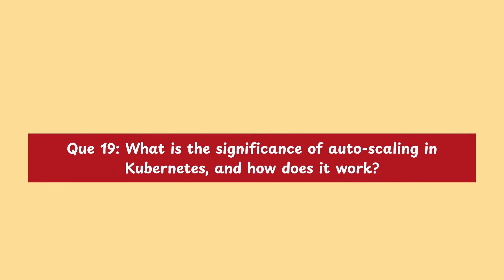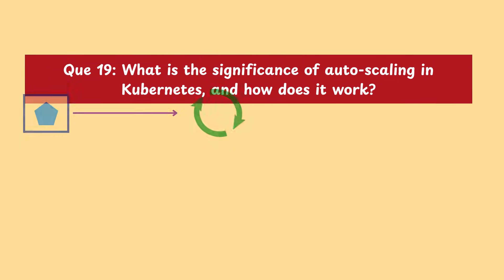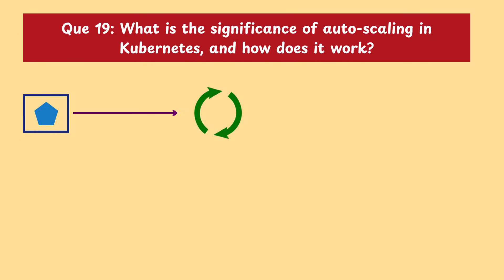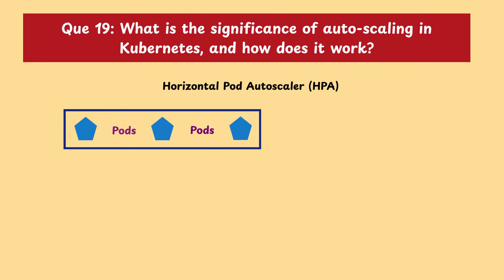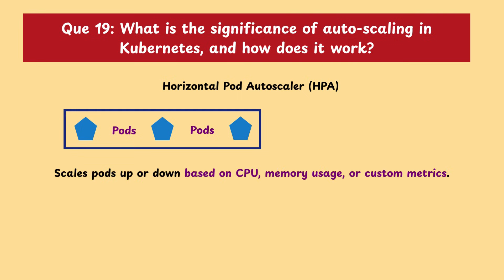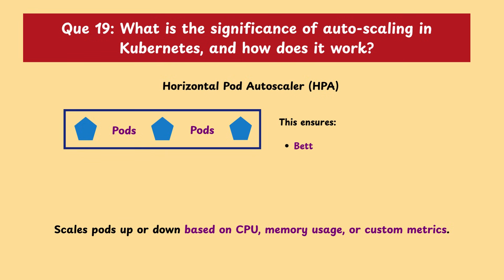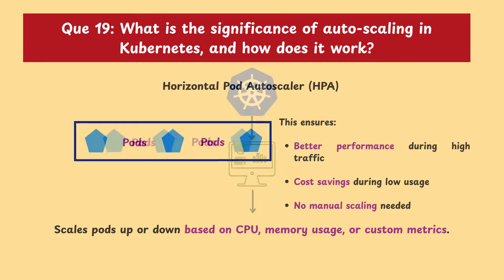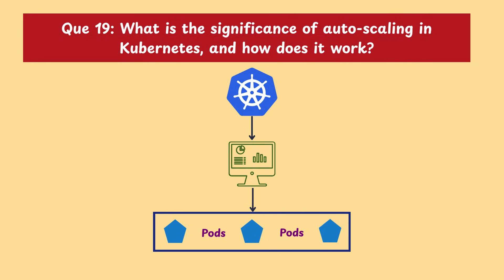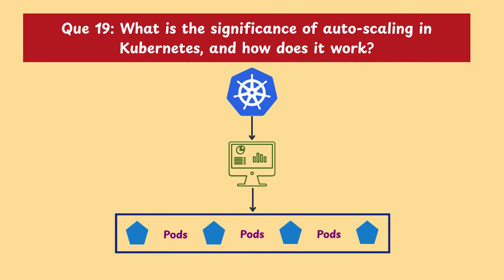Moving on with our next question: what is the significance of autoscaling in Kubernetes and how does it work? Autoscaling in Kubernetes helps applications handle changing loads by automatically adjusting the number of pods. The most common is the Horizontal Pod Autoscaler, which scales pods up and down based on CPU, memory usage, or custom metrics. This ensures better performance during high traffic, cost savings during low usage, and no manual scaling needed. Kubernetes constantly monitors metrics and adjusts pod count to match demand in real time.